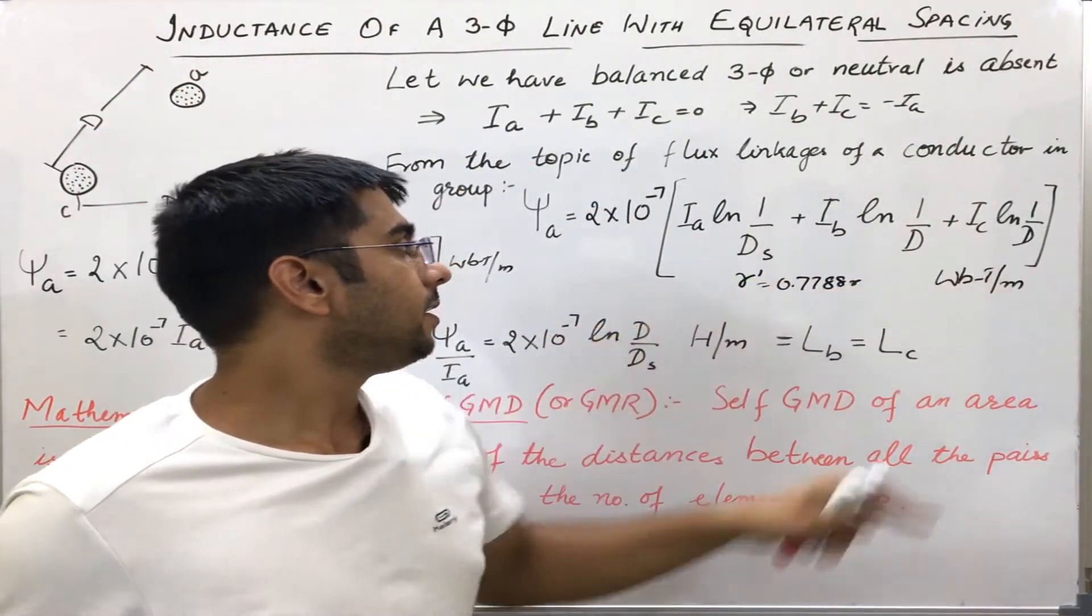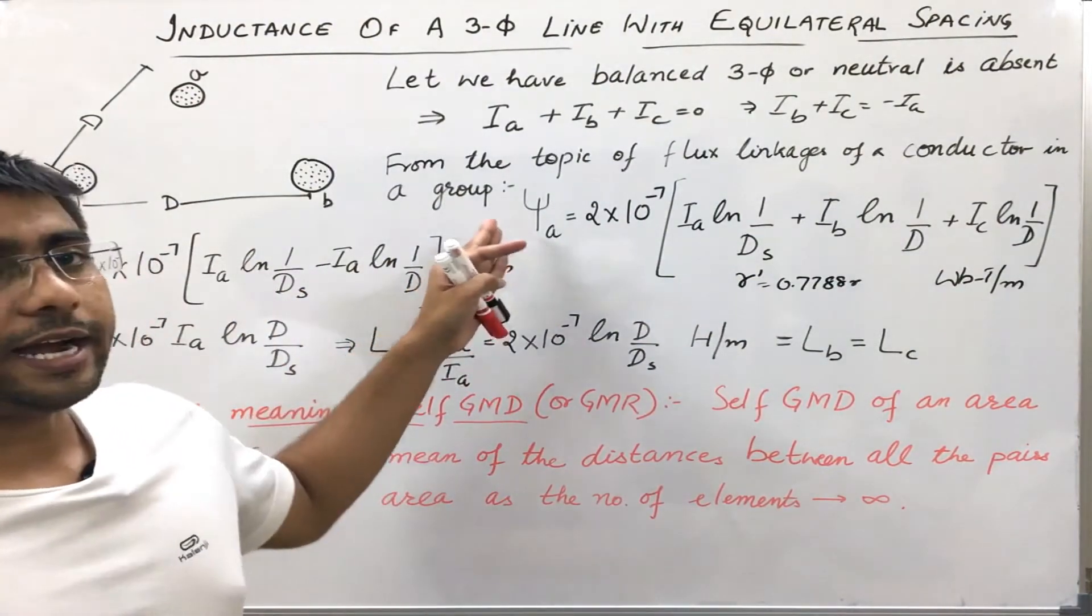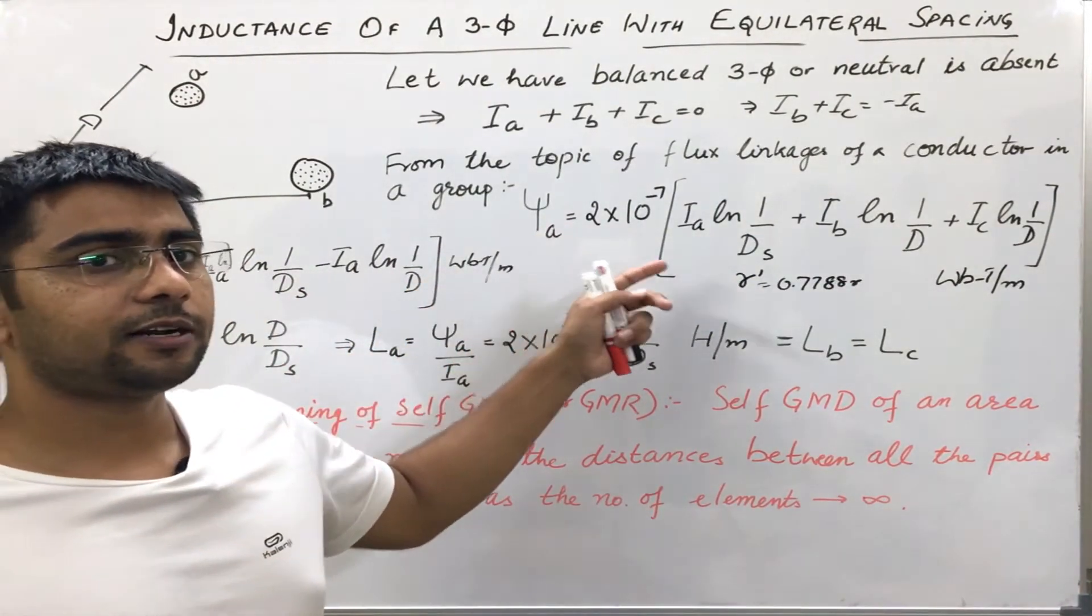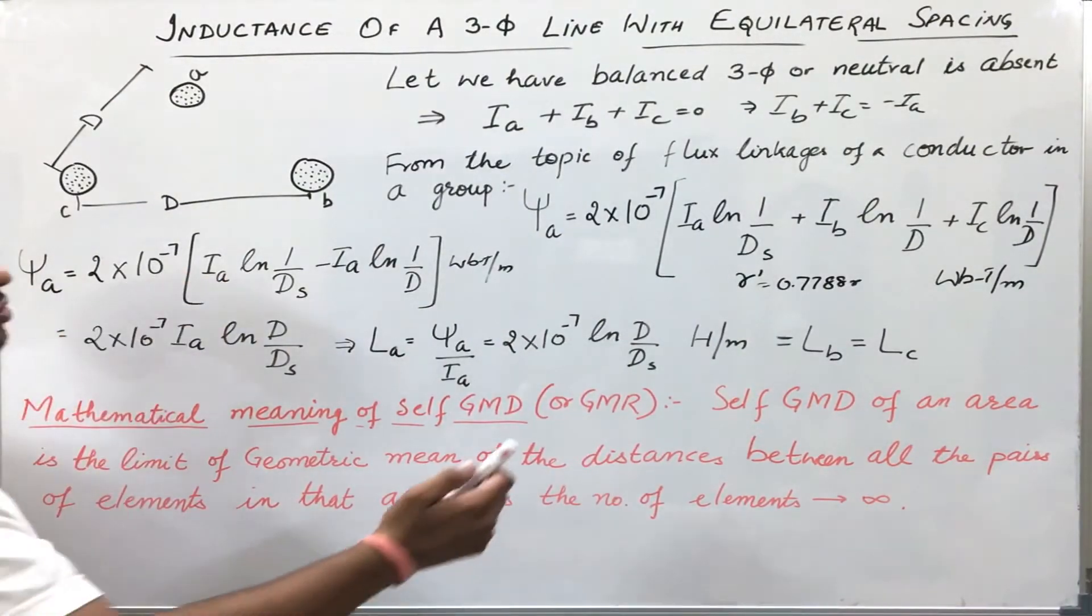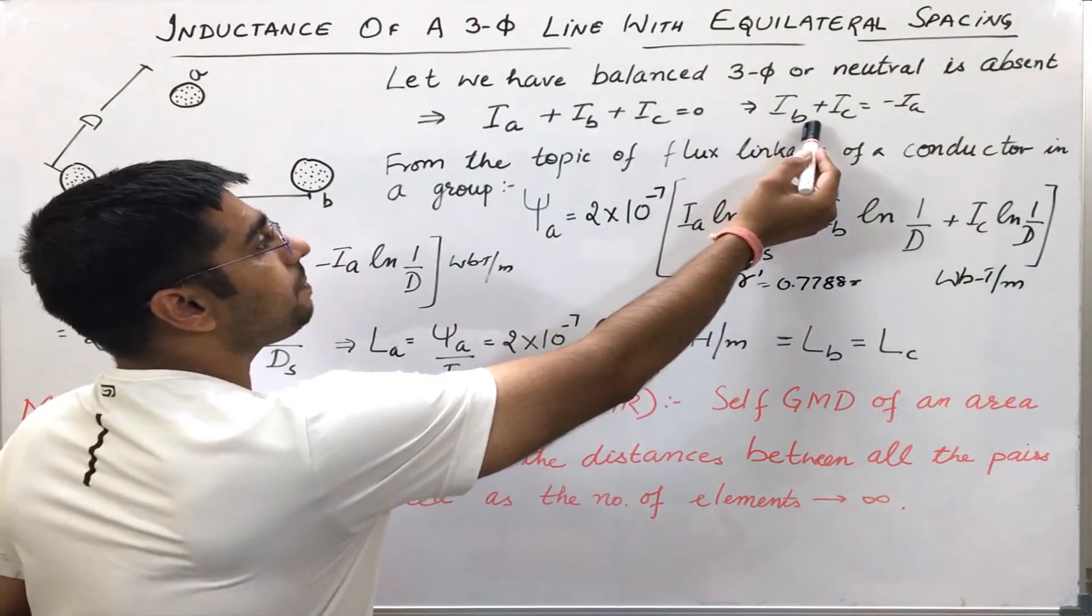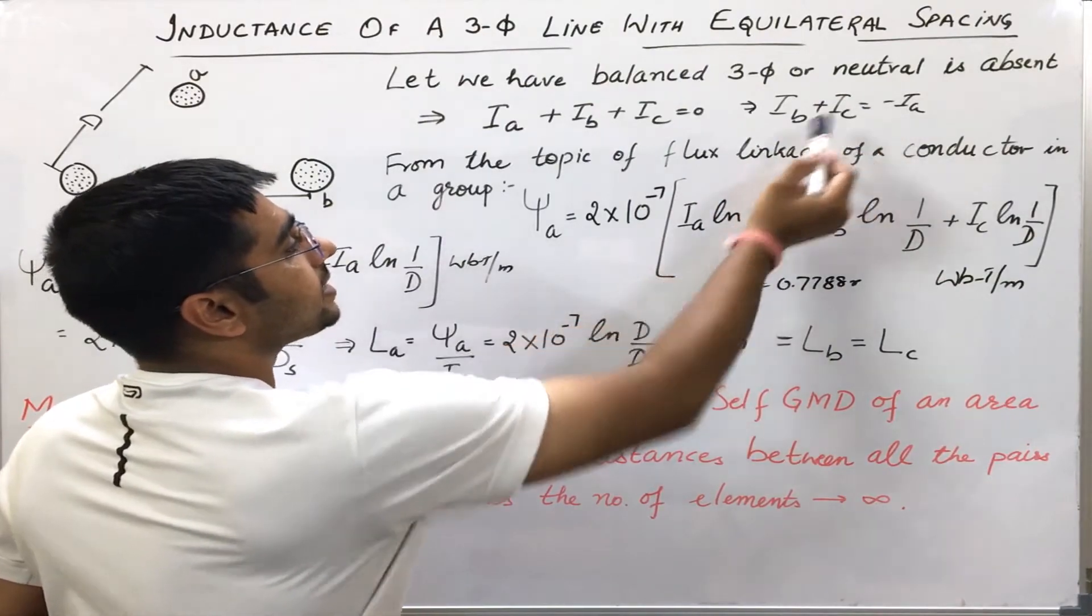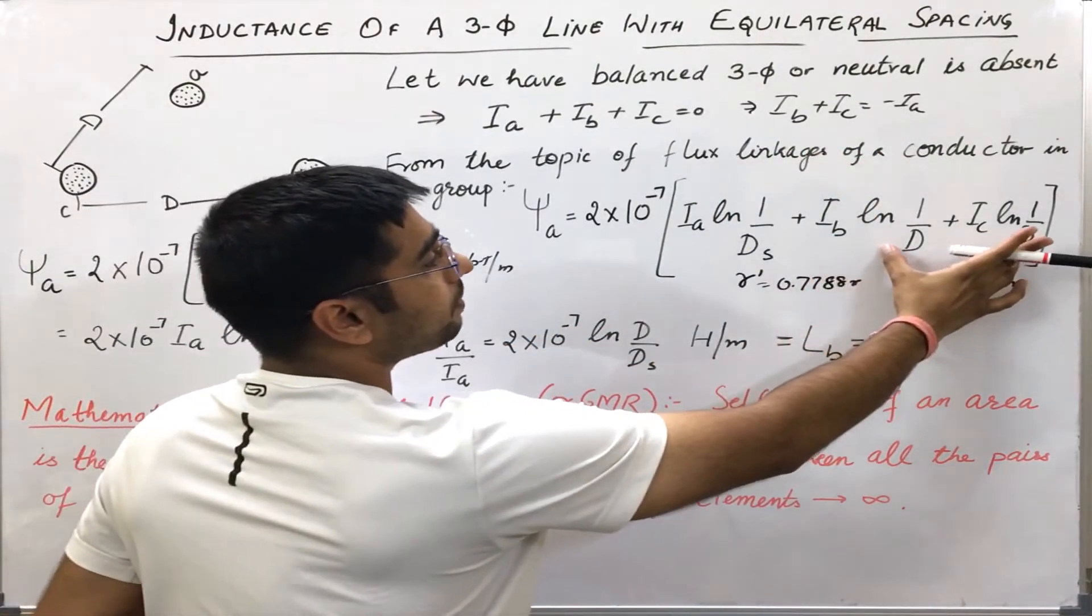In this way we can write the flux linkages of conductor A. Now, I have used this relation that IB plus IC is equal to minus Ia. Since the log part is the same, I can take it common.